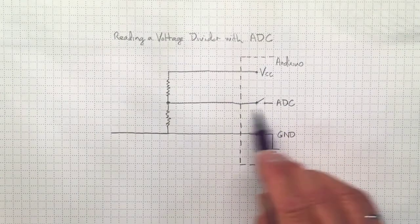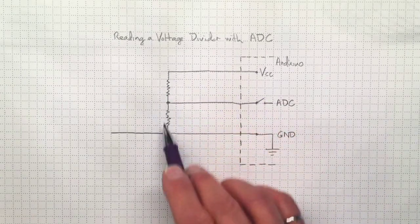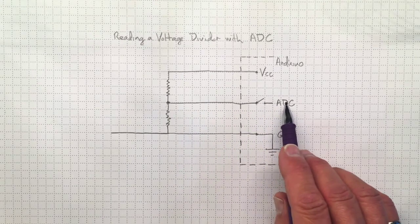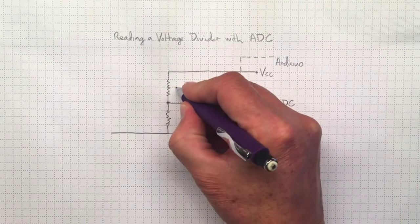As long as these resistances are fairly small, and there's a reasonable amount of current flowing in the circuit, then the amount of current that goes into the analog-to-digital converter is going to be negligible, and it won't have any effect on our measurements.